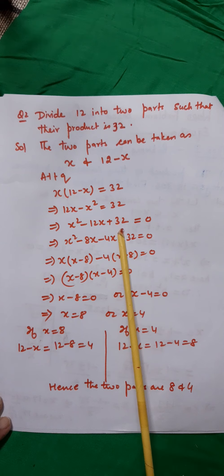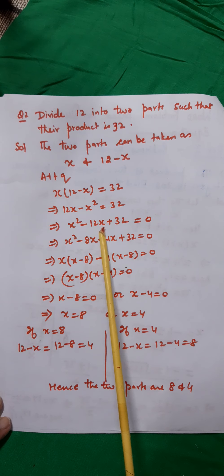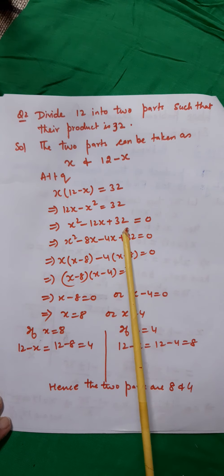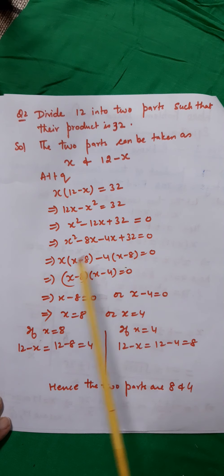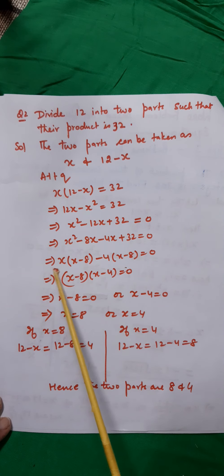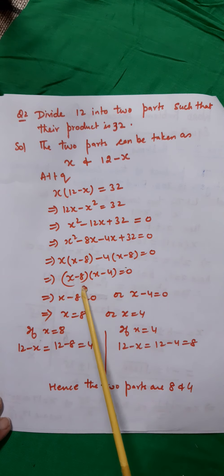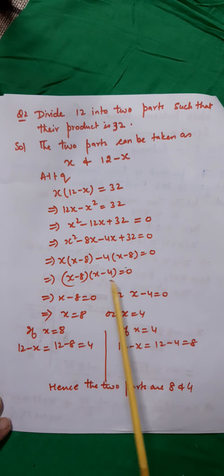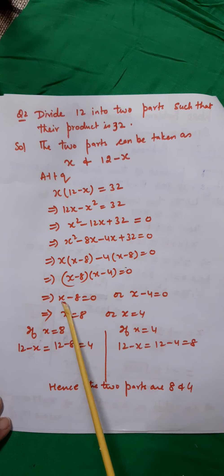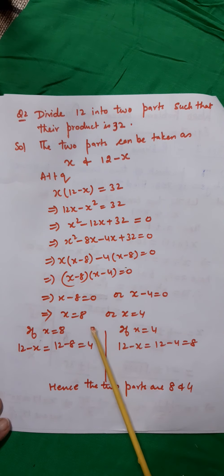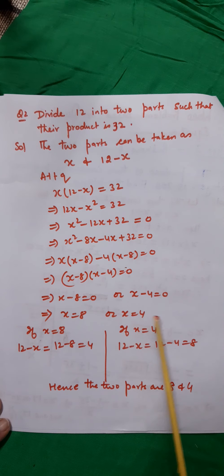I use the splitting the middle term method. I split −12 into two parts −8 and −4 such that their sum is −12 and their product is 32. So x² − 8x − 4x + 32 = 0, giving x(x−8) − 4(x−8) = 0, which implies (x−8)(x−4) = 0. Therefore x = 8 or x = 4.